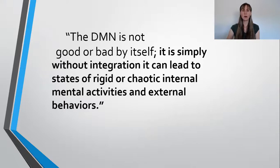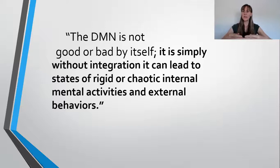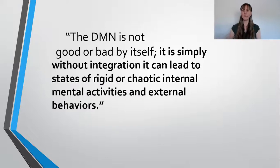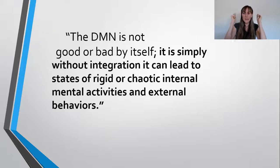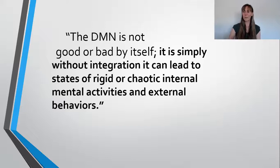We have the default mode, but we want it to be linked up to other parts of the brain. So when you do qigong, for example — where you're breathing in and out through the nose, doing a movement, aware of your whole body, feeling your feet on the ground — the temporal parietal junction, which is more lateral, is integrating with the default mode network, and that helps offset the power of the default mode network.